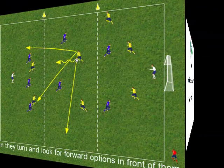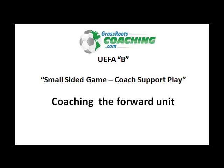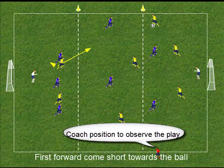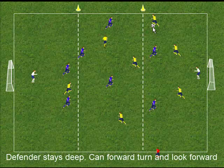We now look at coaching the forward unit, linking the players with the midfield unit and the defensive unit. If the full back gets the ball, can the midfield players create a channel for the ball to be passed forward? Here the first forward has come short with a view of receiving the ball and turning. If they are facing the opposition goal, can the other forward and midfield players provide support in front of the ball?